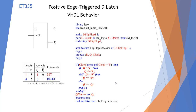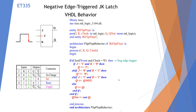Here's our positive edge triggered D latch — you notice the triangle that makes it a positive edge trigger. This part is the same as a standard D latch, but we've added the clock. If clock'event and clock goes from 0 to 1, that's a positive edge — it's only at this clock edge that we act. Q and Q_NOT are always opposite.